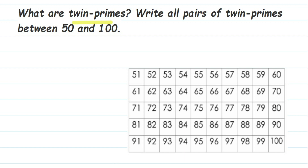For example, take the numbers three and five. Between three and five we have the number four, and four is a composite number while three and five are prime numbers. So three and five are twin primes — there is exactly one composite number between two prime numbers, or we can say the primes are consecutive.